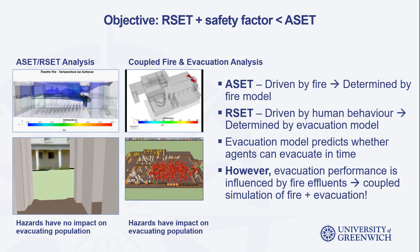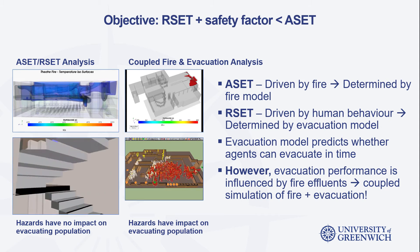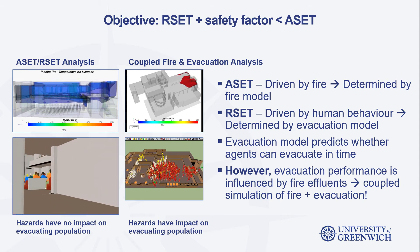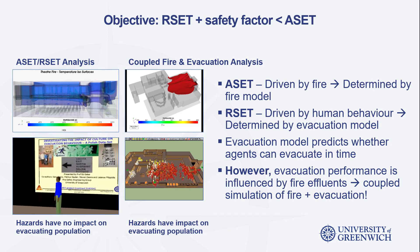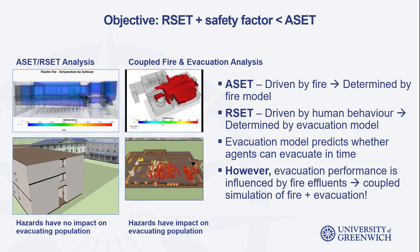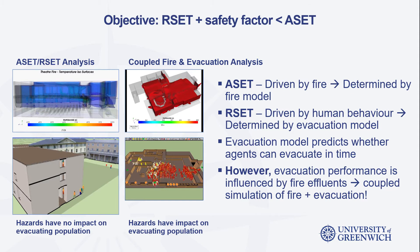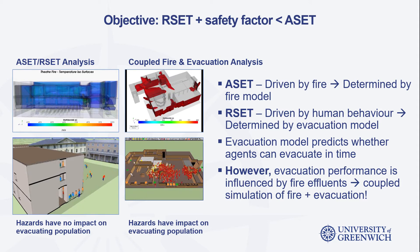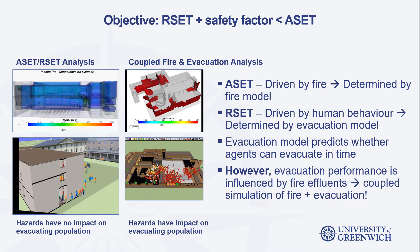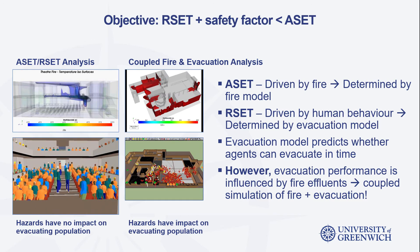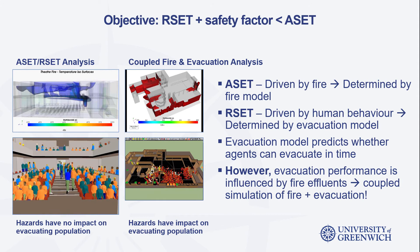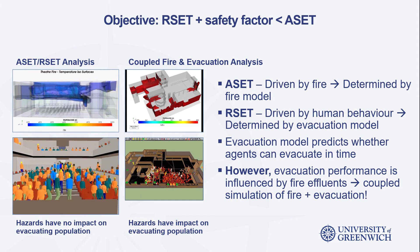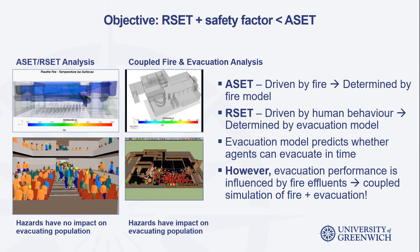ASET is a value that is driven by the fire development and the way that the fire effluents propagate, calculated using fire models. Conversely, RSET is driven by human behavior and is calculated using evacuation simulation models. The objective is to determine that ASET is greater than RSET plus a safety factor. The main reason why a safety factor is needed is to accommodate for the uncertainties inherent within the modeling tools, as no modeling tool can predict with absolute accuracy either the fire or evacuation process.